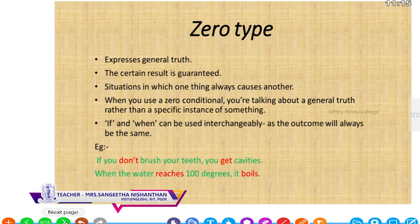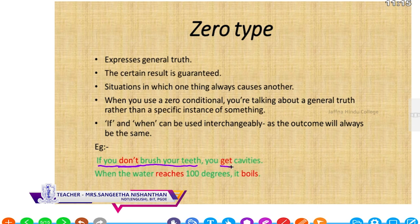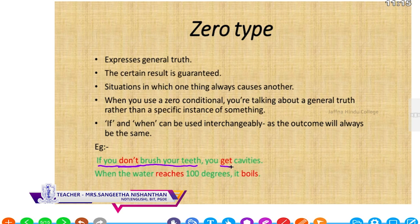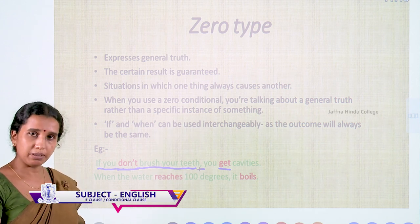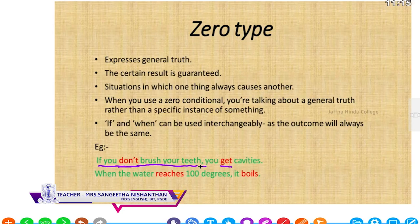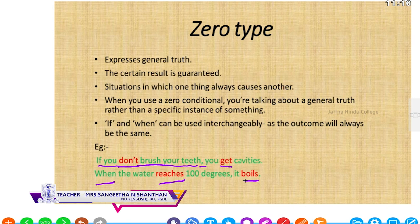For example: if you do not brush your teeth, you get cavities. Here the if-clause and the main clause are both in simple present. Note: if the if-clause precedes the main clause, you should put a comma; if the main clause comes first, there is no comma. Another example: when the water reaches 100 degrees, it boils — 'when' is used instead of 'if' for this scientific truth.